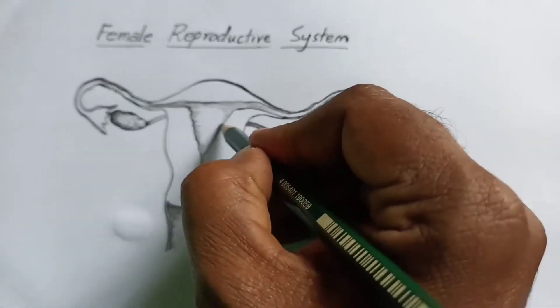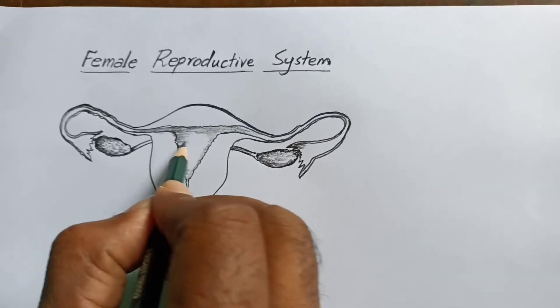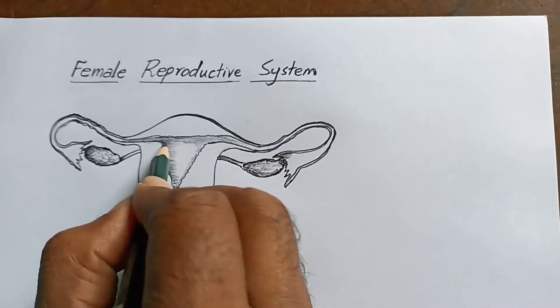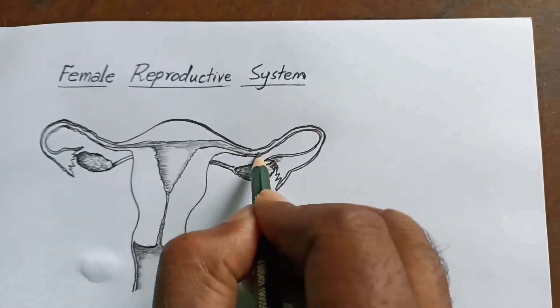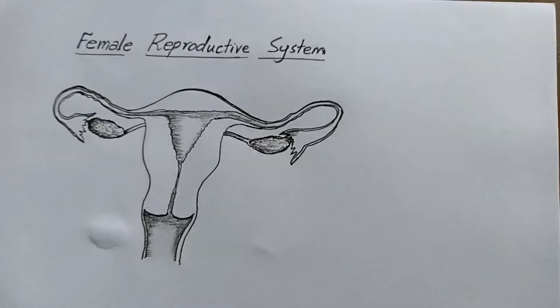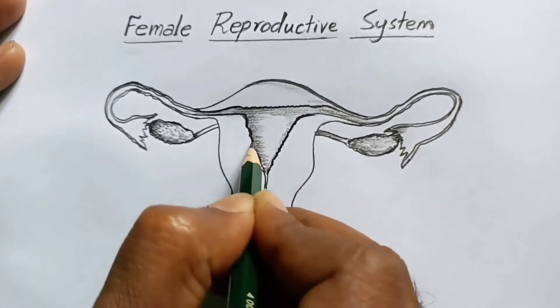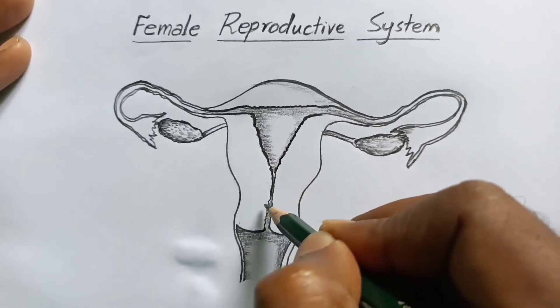Then we have to draw the vagina. I'm drawing a certain outline now. Go for labeling. Make it dark like this.